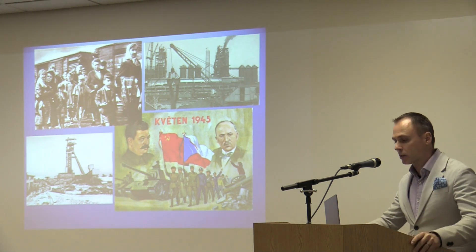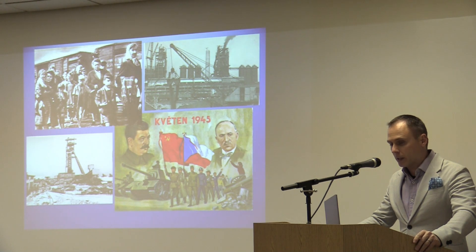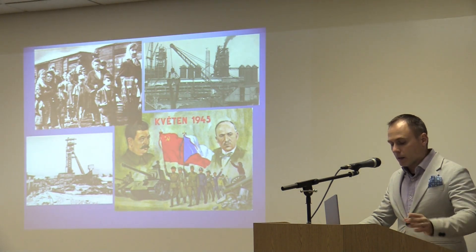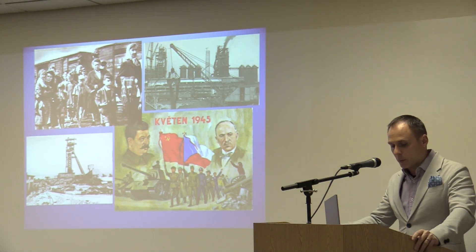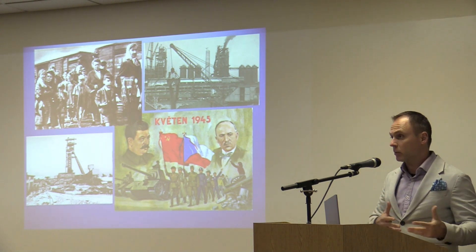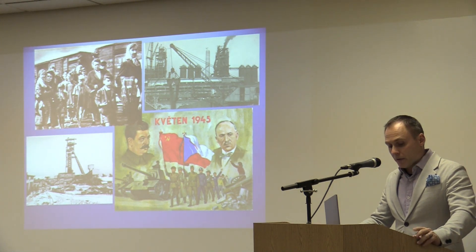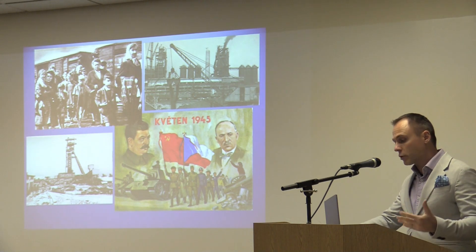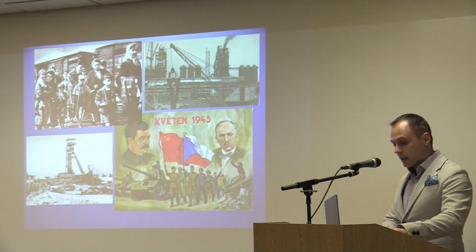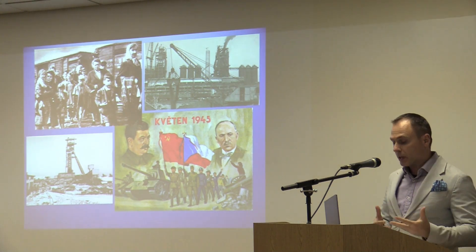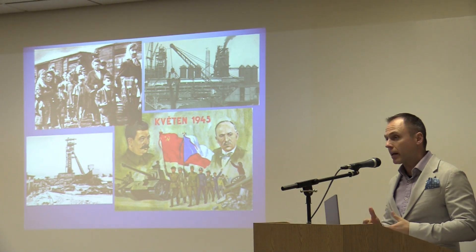With the exception of Subcarpathian Ruthenia, which became part of the Soviet Union in 1944, the Czechoslovak Republic was re-established at the end of World War II. Between the liberation in May 1945 and the communist takeover in February 1948, the Czechoslovak economy developed into a system radically different from the liberal capitalism of the 1920s and 1930s. Almost three and a half million Germans were expelled and robbed of their possessions. Key industries such as banks, insurance companies, mines, and heavy industry were nationalized. The post-war period was typified by the rising power of the communist party and its orientation towards the Soviet Union.